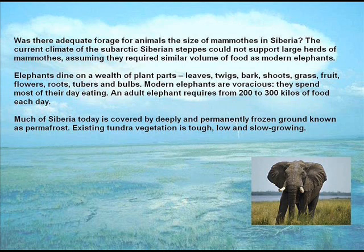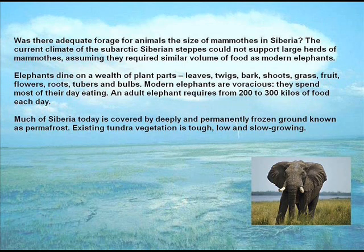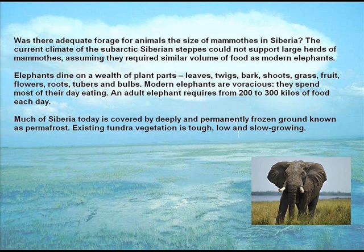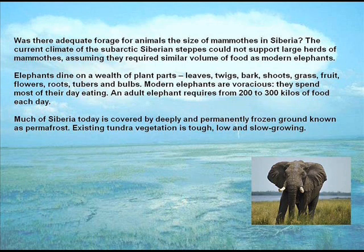Was there adequate forage for animals the size of mammoths in Siberia? The current climate of the subarctic Siberian steppes could not support large herds of mammoths, assuming they required a similar volume of food as modern elephants. Elephants dine on a wealth of plant parts — leaves, twigs, bark, shoots, grass, fruit, flowers, roots, tubers and bulbs. Modern elephants are voracious; they spend most of their day eating. An adult elephant requires from 200 to 300 kilos of food each day.